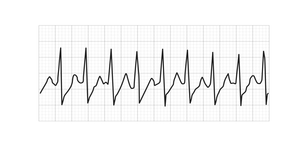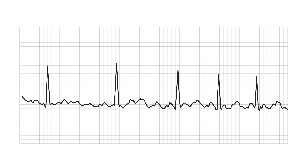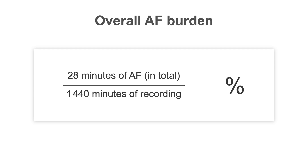If there are episodes of paroxysmal atrial arrhythmias, such as atrial fibrillation or atrial flutter, how long do the episodes last? What is the overall AF burden — expressed as the percentage of the recording which the patient spends in AF? This is important when trying to decide whether a patient may need anticoagulation, and also in monitoring their response to treatment.